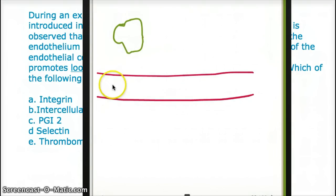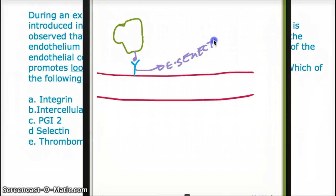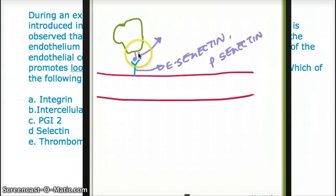Imagine that this is our white blood cell and this is our blood vessel. From our blood vessel, we'll have receptors sticking out. From our white blood cell, we'll also have receptors that come and bind to those receptors. The receptors sticking out from the blood vessel are called E-selectin or P-selectin, and the receptor coming out from the white blood cell is called Sialyl-Lewis-X.